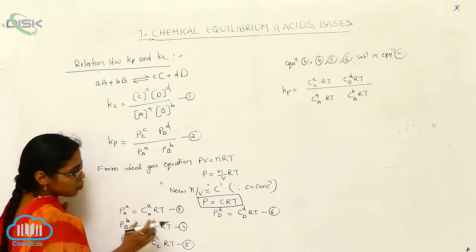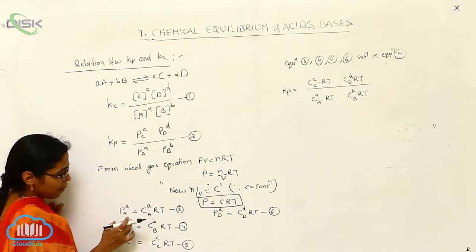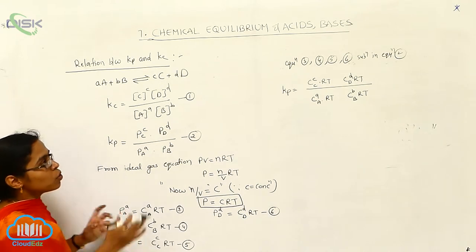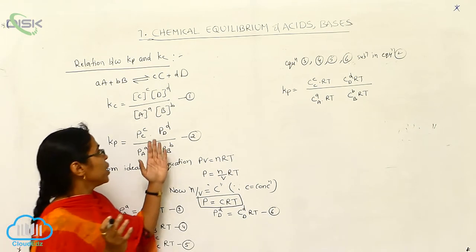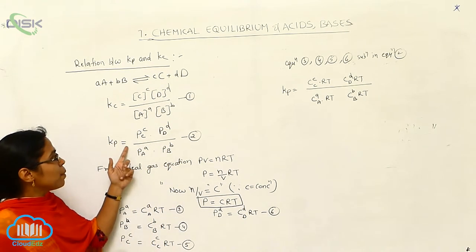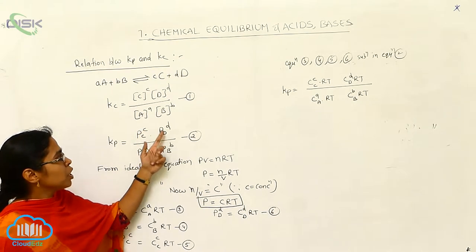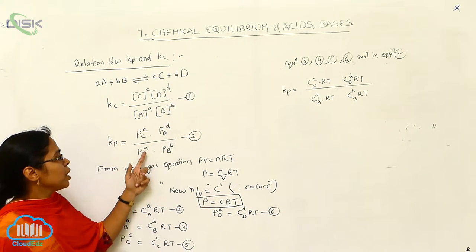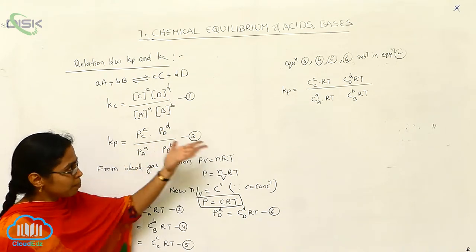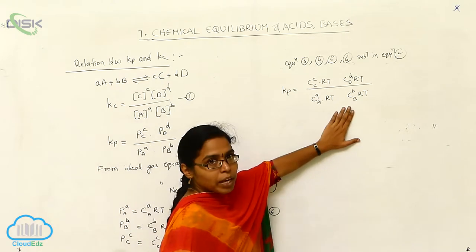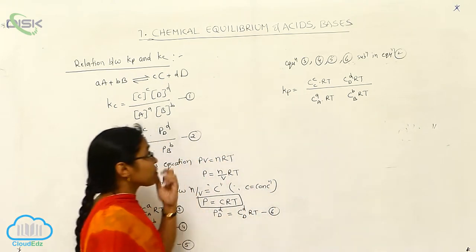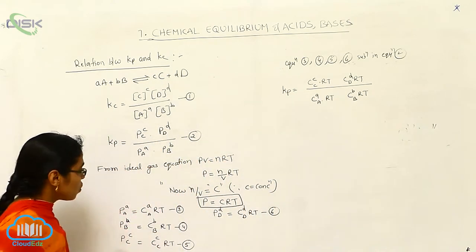For the individual components A, B, C, D, I can take these equations and substitute them into the Kp expression: Kp is equal to Pc to the power of C, Pd to the power of D, divided by Pa to the power of A, Pb to the power of B. So now I can write from this one.